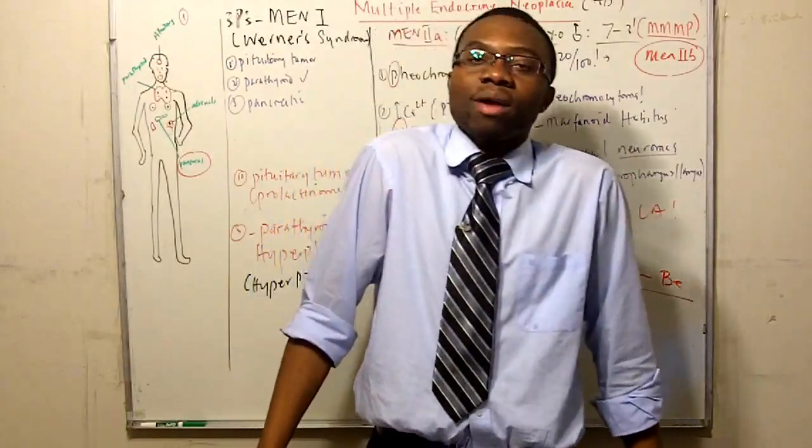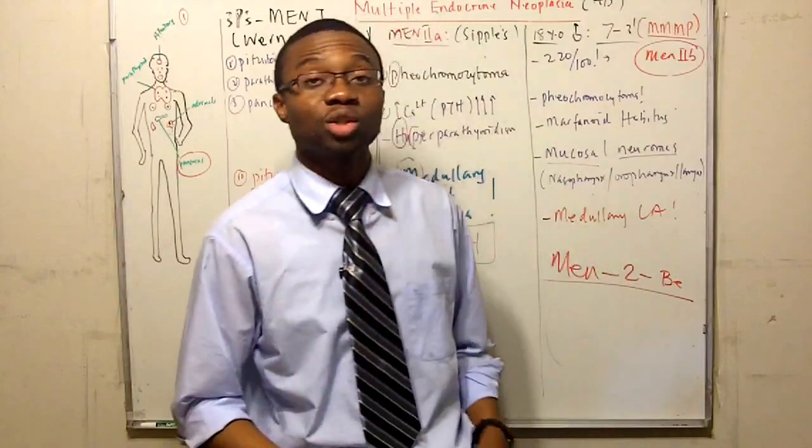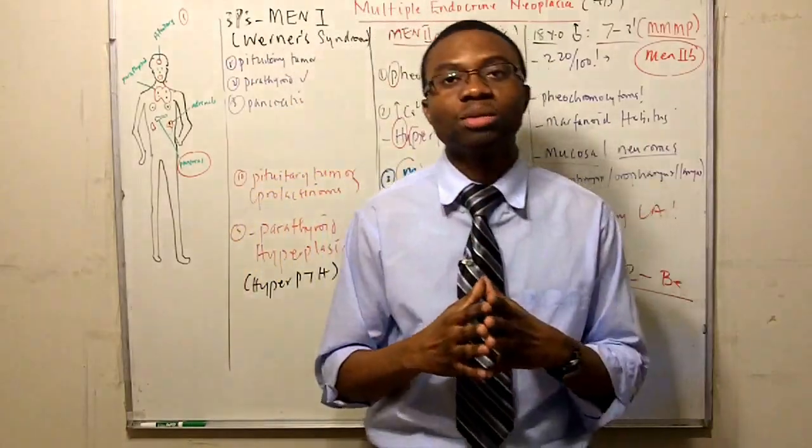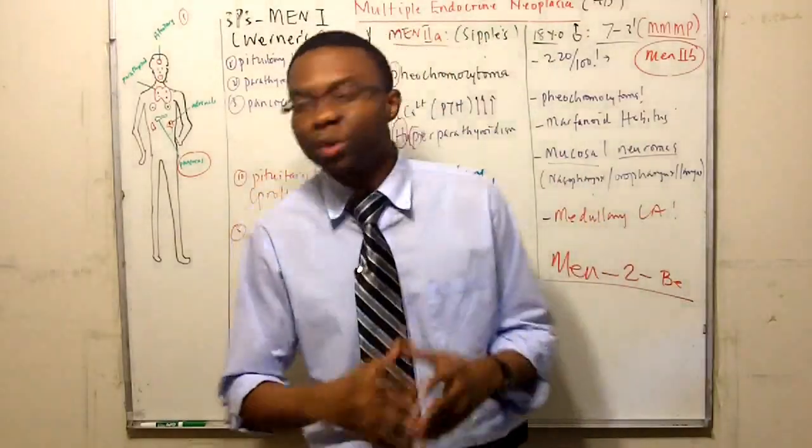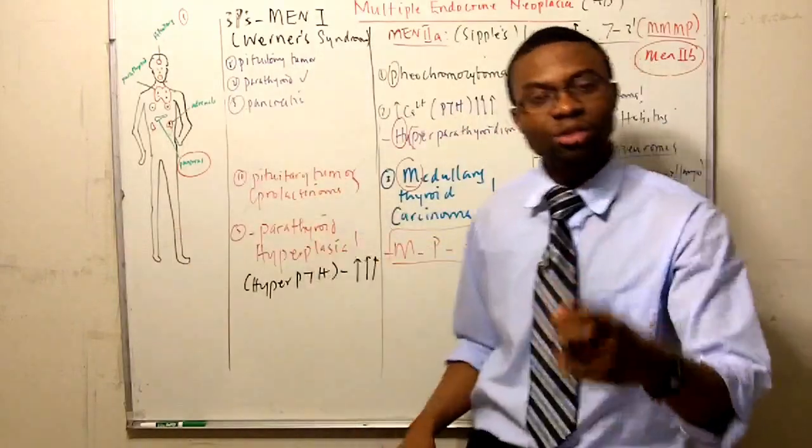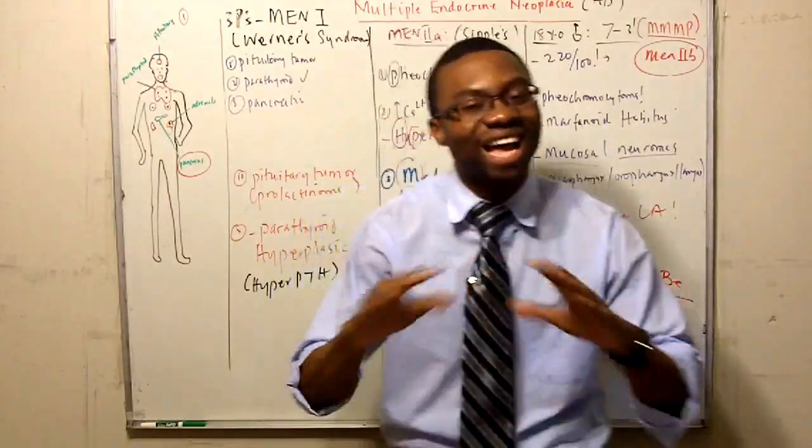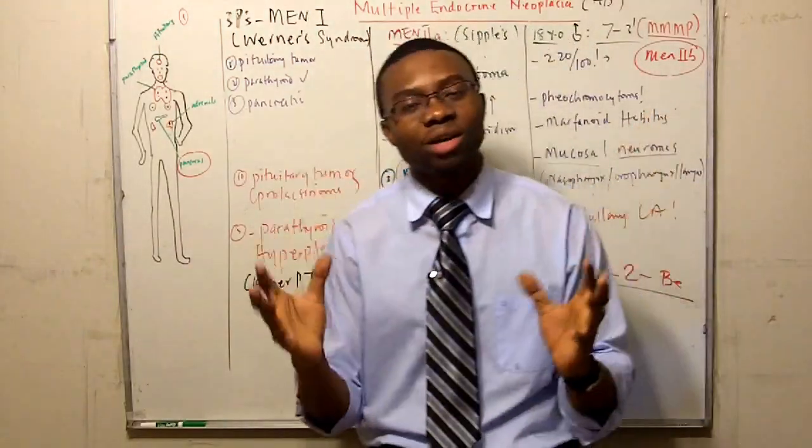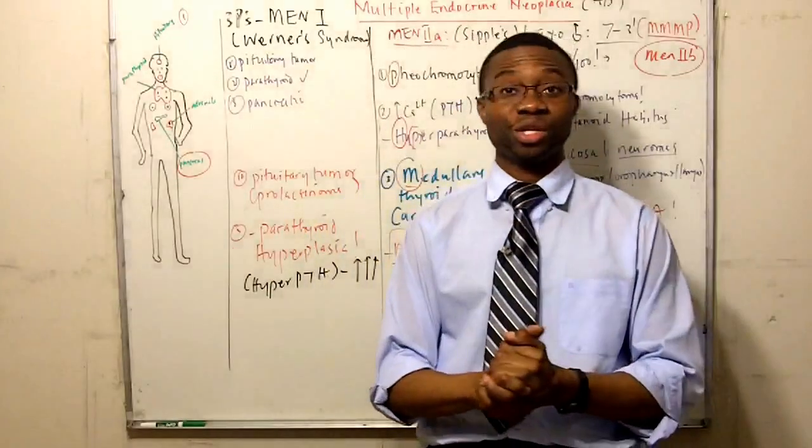By the time you get to their brother who's 18, whose name happened to be MEN-to-be, and that's how you remember it. Three M's and one P: marfanoid, tall and lanky, he's got pheochromocytoma, mucosal neuromas. And that's how you remember it. They will give you two out of the syndromes and tell you what else you're going to find. And that's how you memorize and understand multiple endocrine neoplasia.